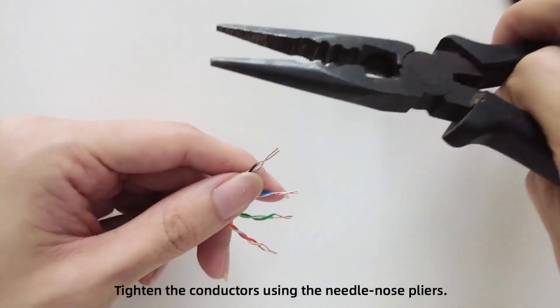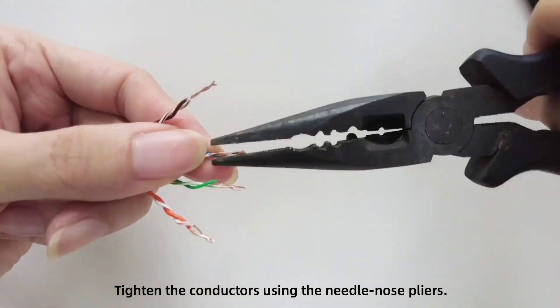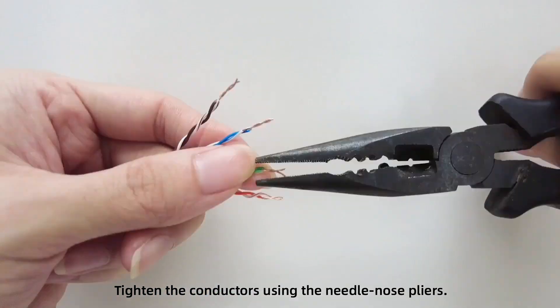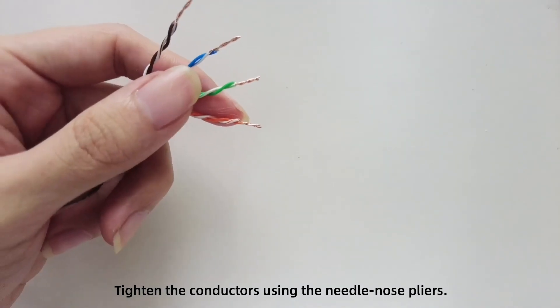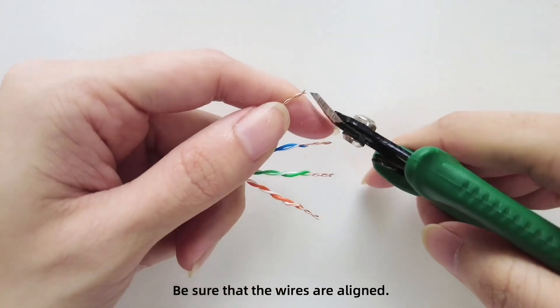Tighten the conductors using the needle nose pliers. Be sure that the wires are aligned.